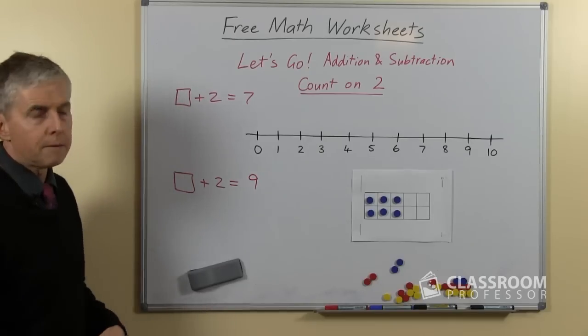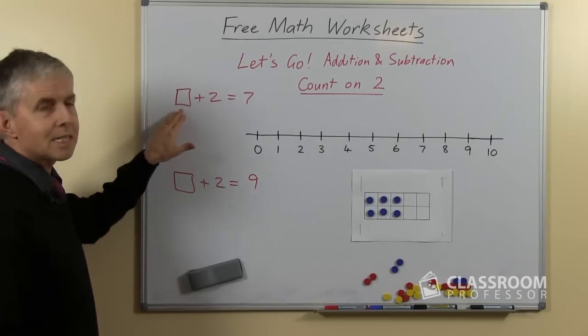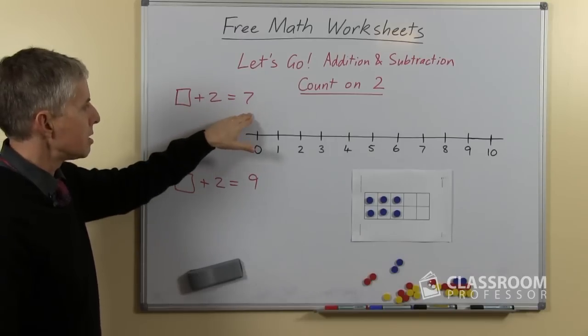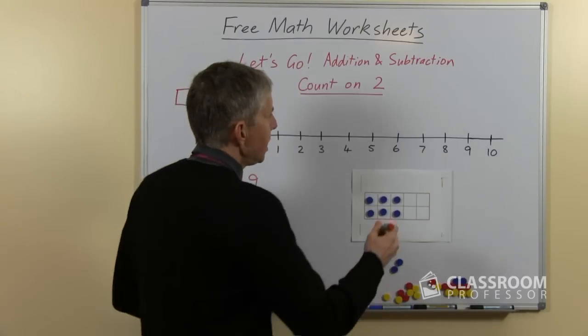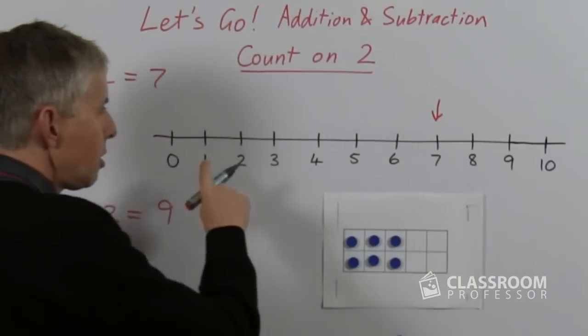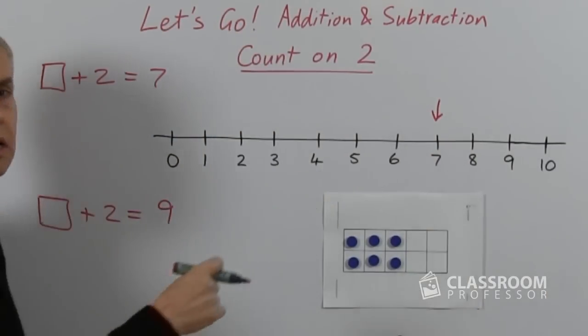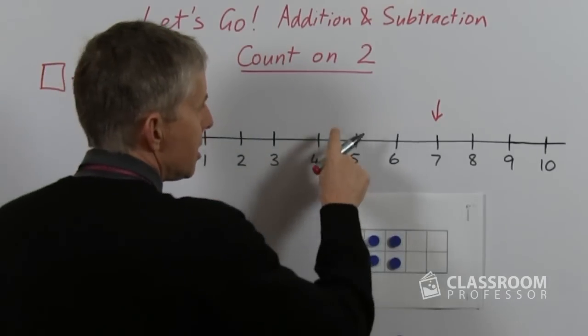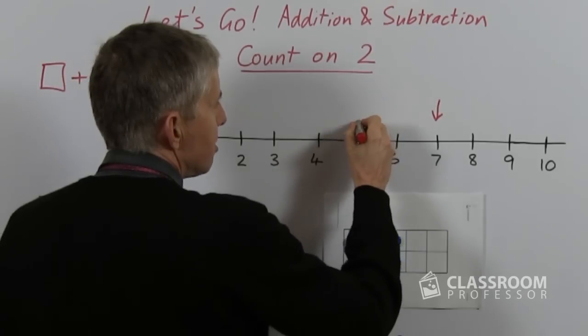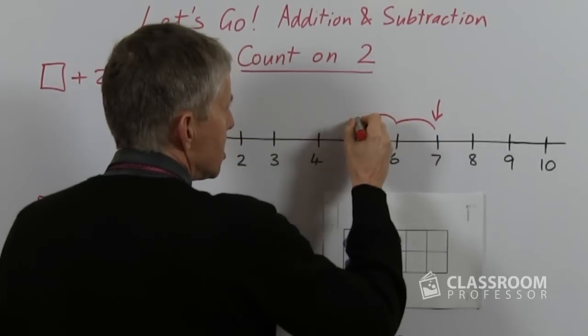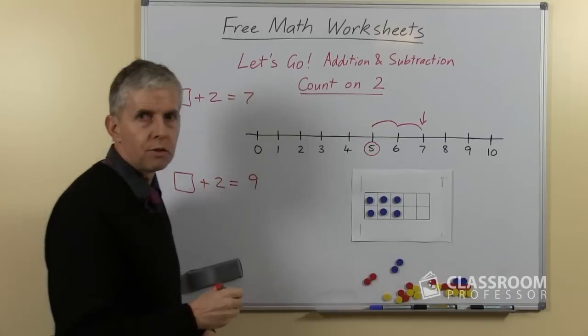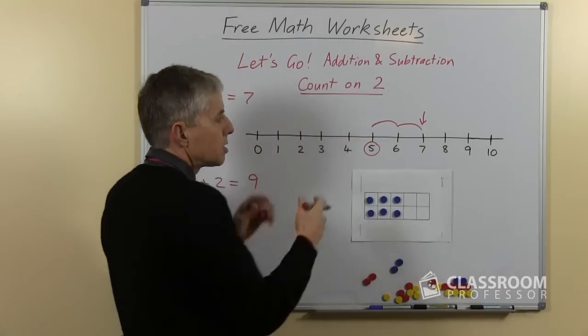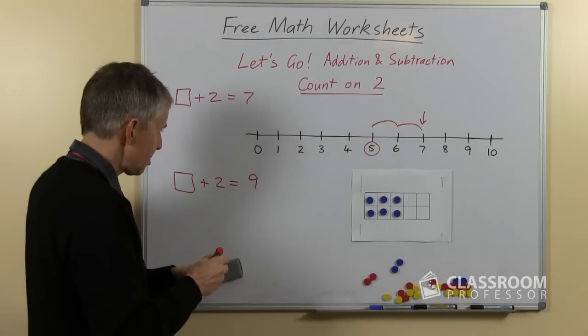So looking at the number line, here is the question when we start with a number and we don't know what that number is yet, and we add 2 and the answer is 7. Using the number line, here is the 7. If we started over here and we made 2 hops and we finish at the 7, where did we start from? So you need to look at this and work out where did we start if it's 2 hops, here are 2 hops, 1, 2, so we must have started here at the 5. So it's a little bit more difficult, you have to be able to think where would we have started, it's a bit like thinking backwards from the number that we get to.